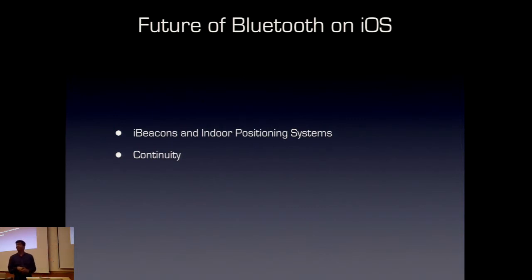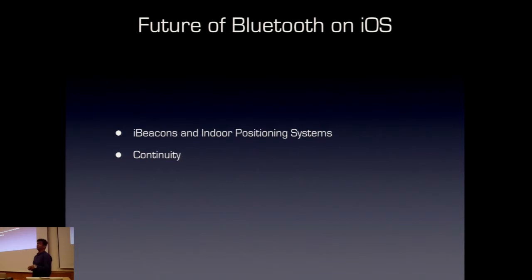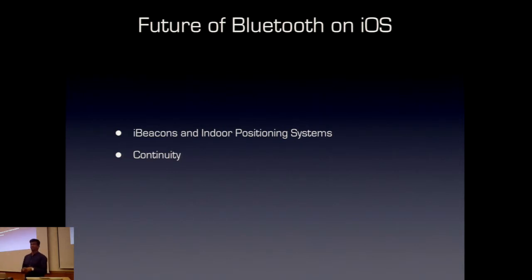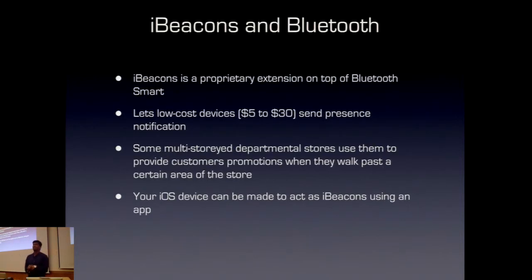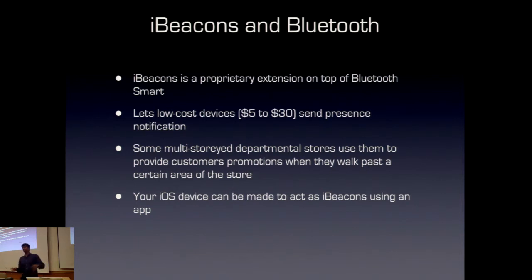We've come to the last part of the talk: the future of Bluetooth on iOS. First is iBeacons, introduced last year with iOS 7. The goal of Apple was to provide an easier way to navigate indoors — shopping malls, car parks, etc. iBeacons is a proprietary extension developed by Apple on top of Bluetooth Smart. As of now, Android devices don't officially support iBeacons, though there are hacks, and Apple doesn't officially publish specifications for use with competing platforms.